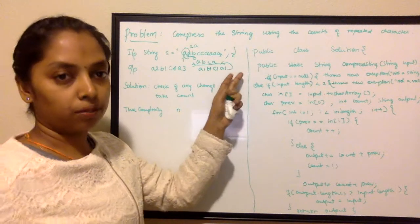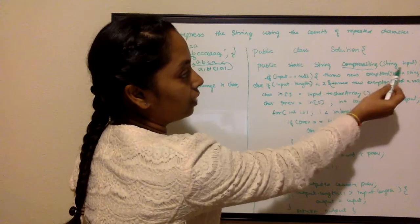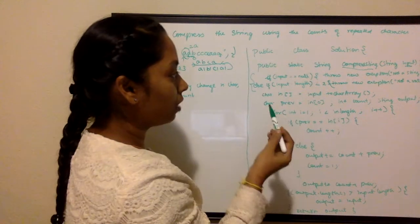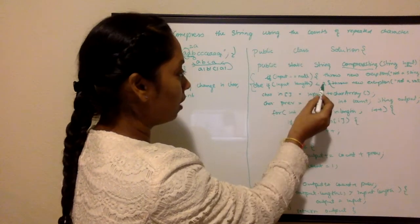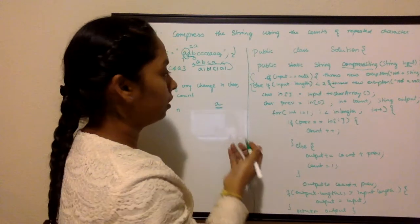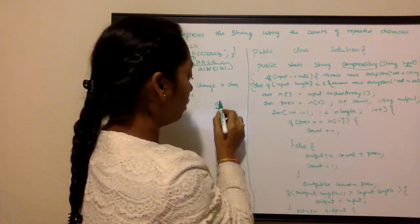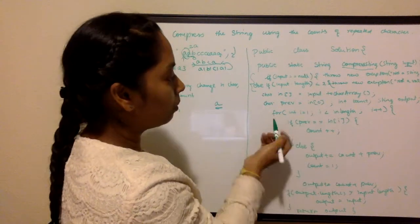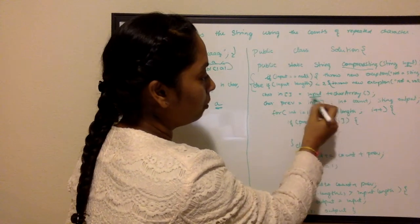Let's go to the code. I have written a 'compressedString' method which takes a string input. There are test case scenarios: if it is null, throw an exception. If the length is less than 2, there is no point — if they're returning just one character, why do we need to compress? So for only one character input I'm throwing a 'not a valid input' exception.